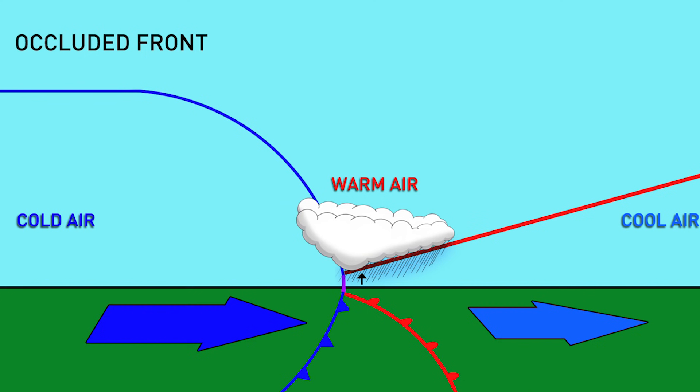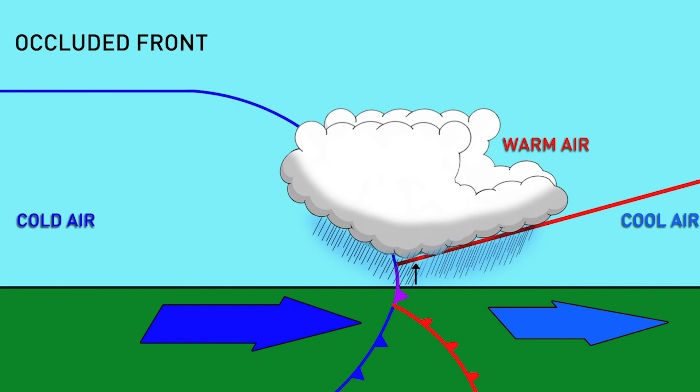As the two fronts meet, the warm air between them is pushed upward, but the denser air behind the cold front also wedges the cool air ahead of the warm front upwards, too, lifting the entire boundary between cool and warm air completely off the ground.